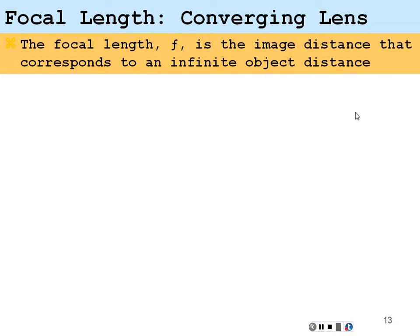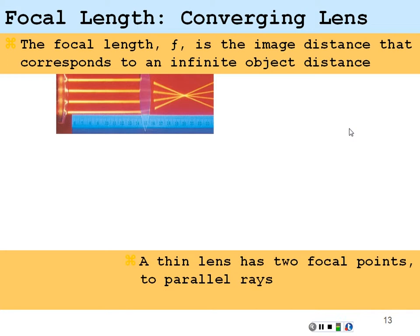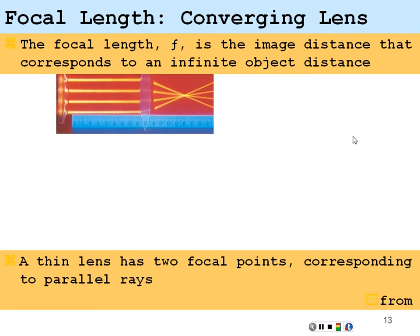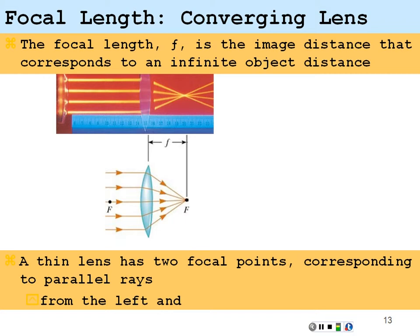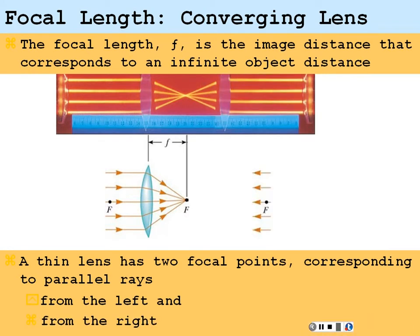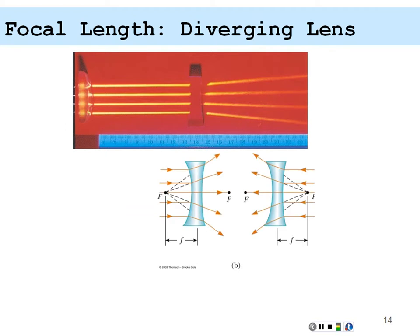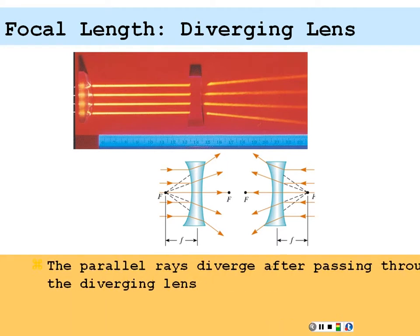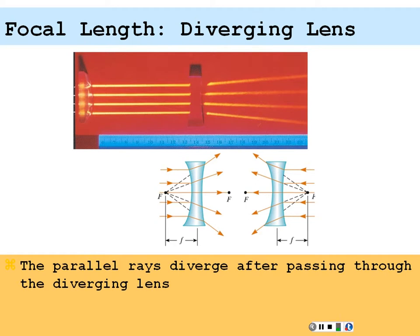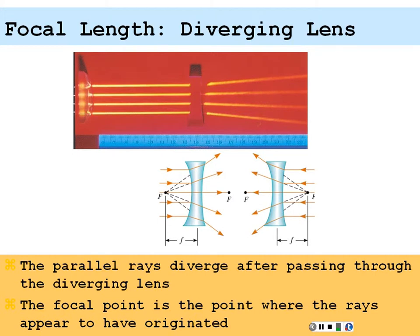The focal length, designated by f, is the image distance that corresponds to an infinite object distance. A thin lens will have two focal points. Parallel rays coming into the lens will converge on a point, and that distance from the lens to that point is the focal length — and the same applies to parallel rays from the right. For a diverging lens, parallel rays diverge after passing through, and the focal point is the point where the rays appear to have originated.